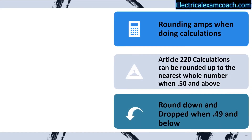In article 220 calculations, we're gonna be able to round up or down. We're gonna round up to the nearest whole number when it's 0.50 and above, and we're gonna round down and drop it when it's 0.49 or below. We're only gonna do it one time at the end of the calculation — you're not gonna be rounding up and down in between each piece, or you'll definitely end up with the wrong answer.